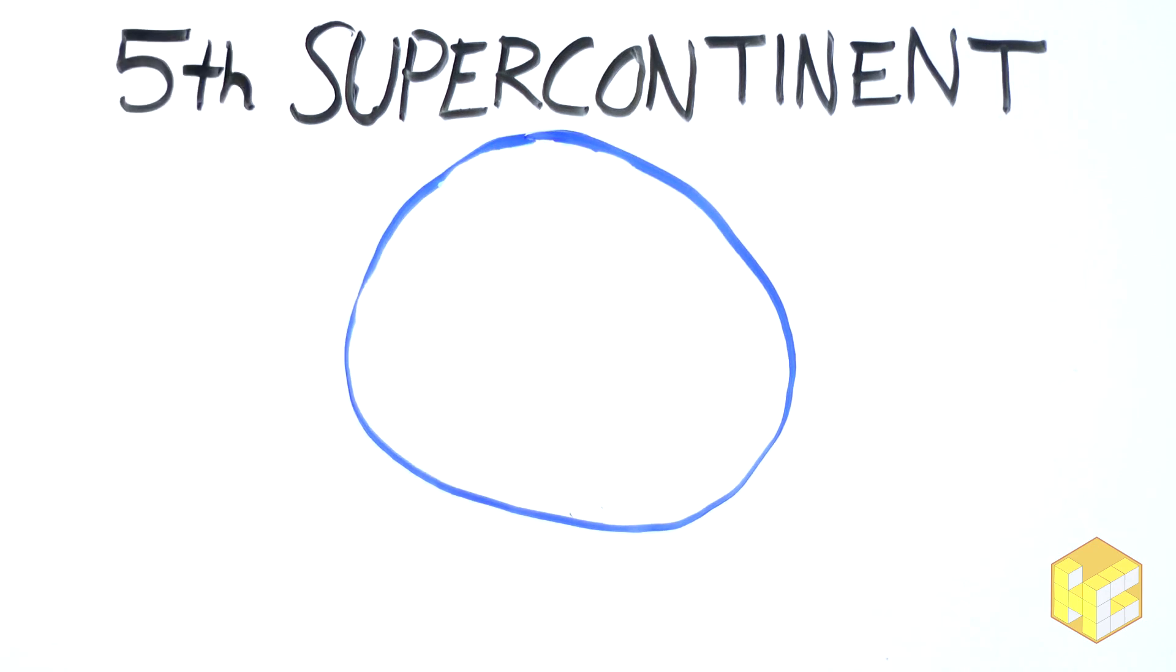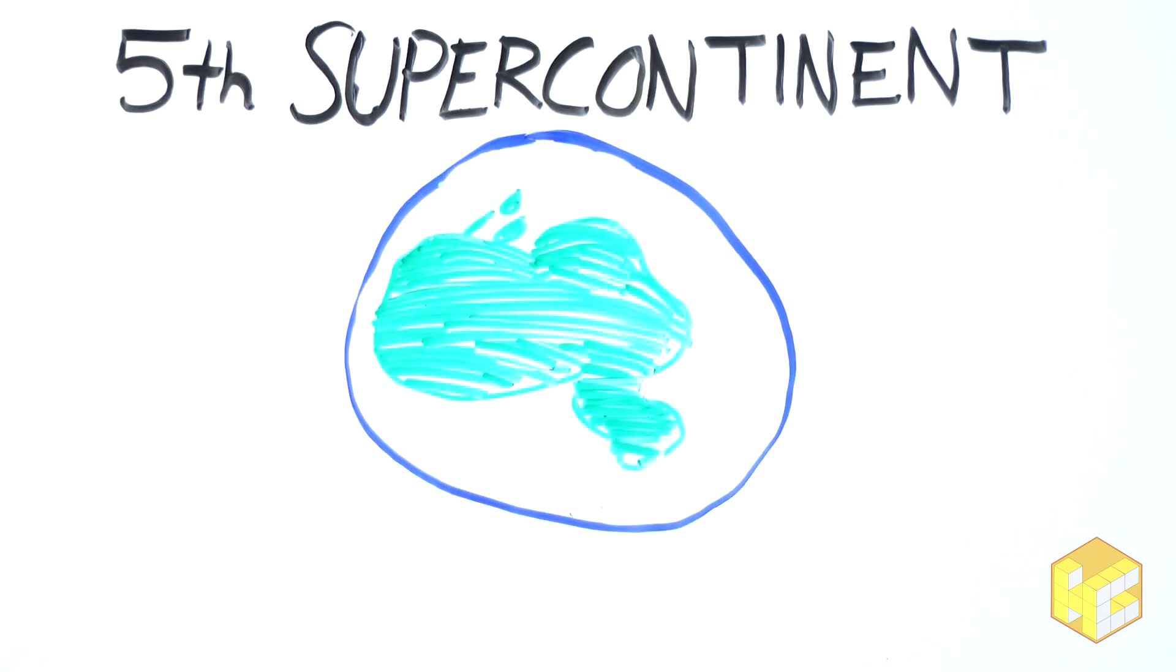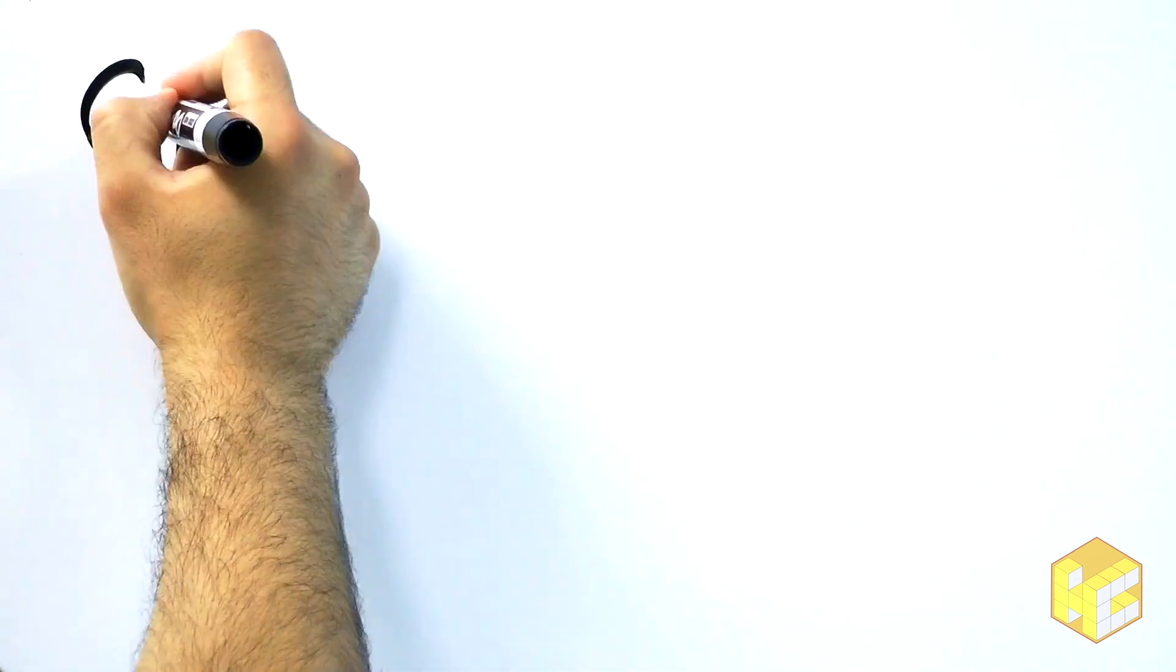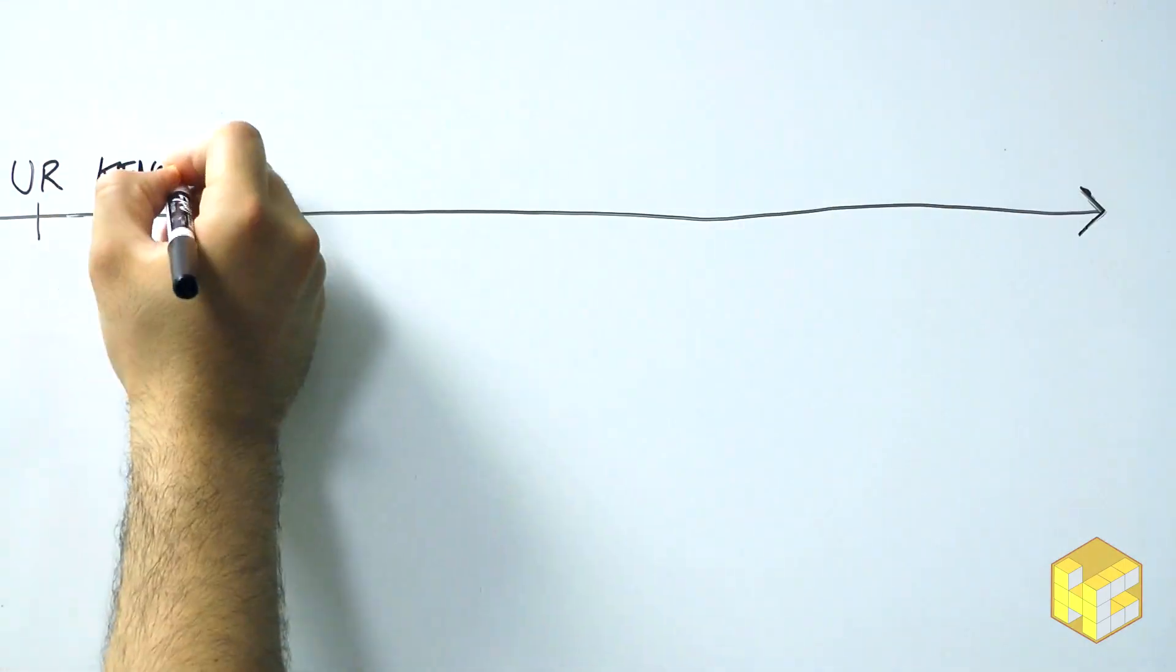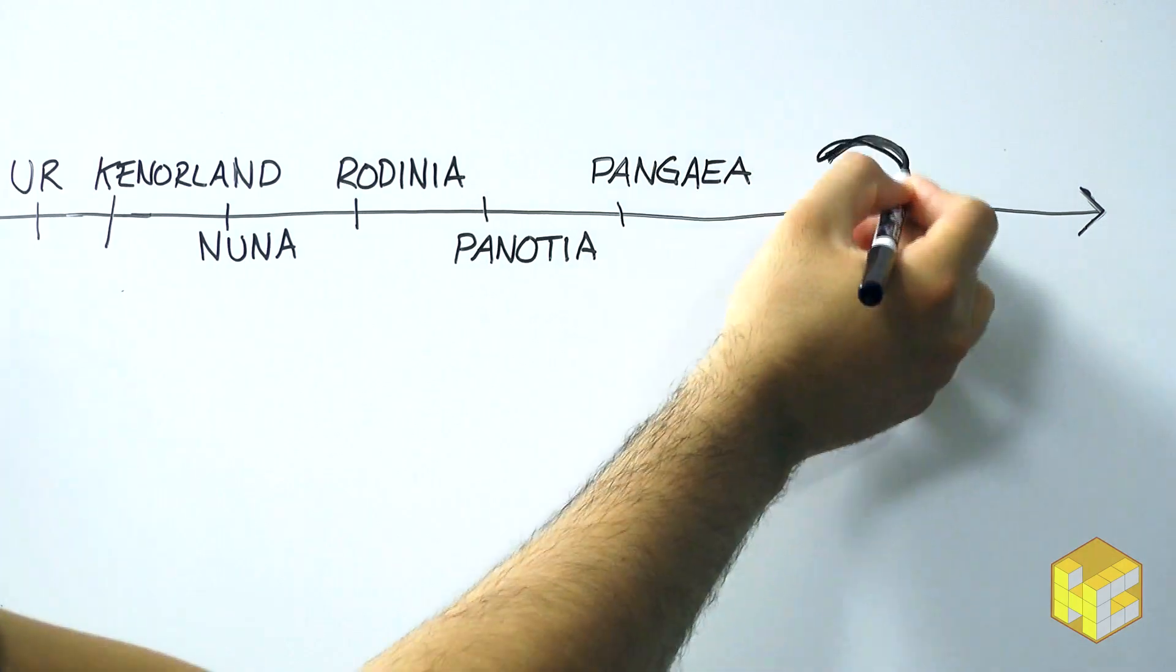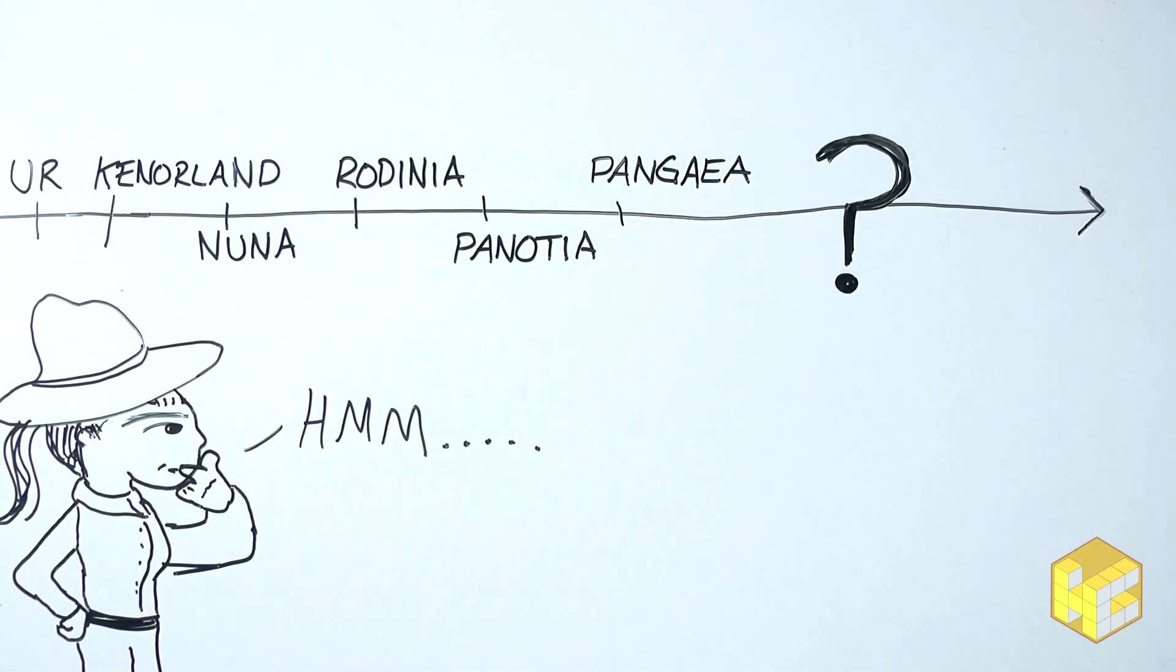The next supercontinent was Panosha, which formed about 650 to 500 million years ago. And, following that, was the famous Pangaea, which is hanging around 300 to 200 million years ago. This begs us to ask, how did these supercontinents form, and when and where will the next one be? What will it look like?